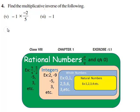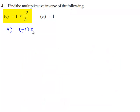Now let us move on to the fifth part of the question. Here we need to find the multiplicative inverse of -1 times -2/5.